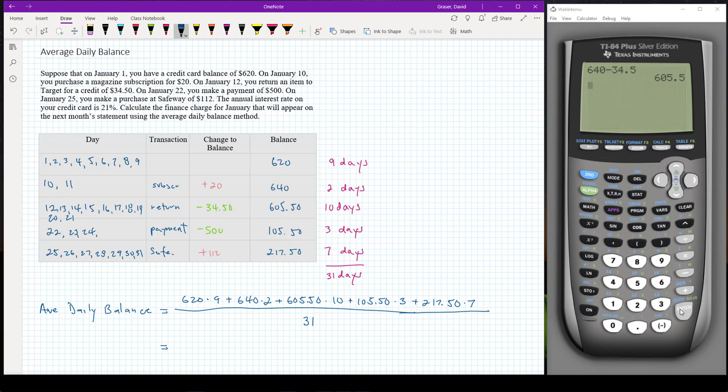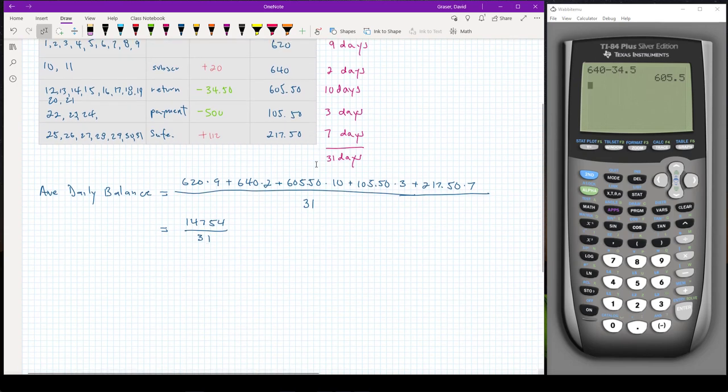When I work out that top, it comes out to be 14,754 divided by 31. And so when I work out that division, I get a number that is approximately $475.94, that's to the nearest penny.